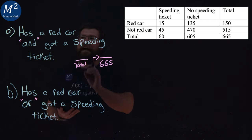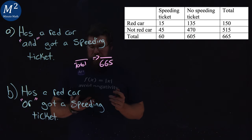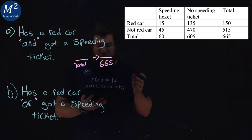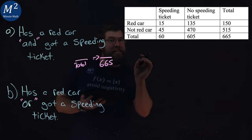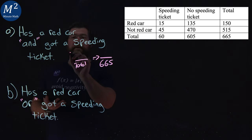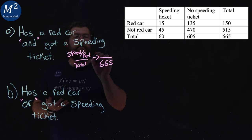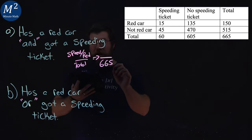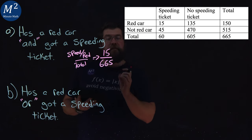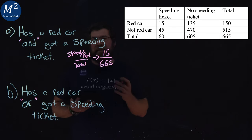The first question said, has a red car and got a speeding ticket. So if we look at the column of speeding ticket and we see the ones that got speeding ticket and a red car, that's that intersection here. So we have a speeding ticket and red. That is a total of 15.